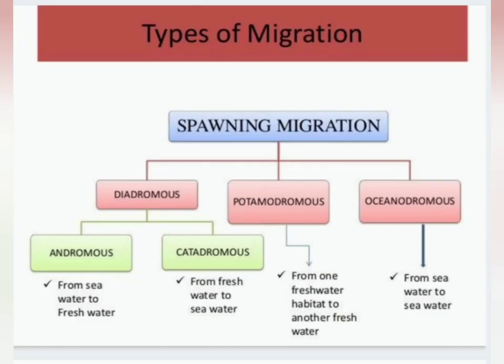The spawning migration types are called: Diadromous, Potamodromous, and Oceanodromous. These also include Anadromous and Catadromous.